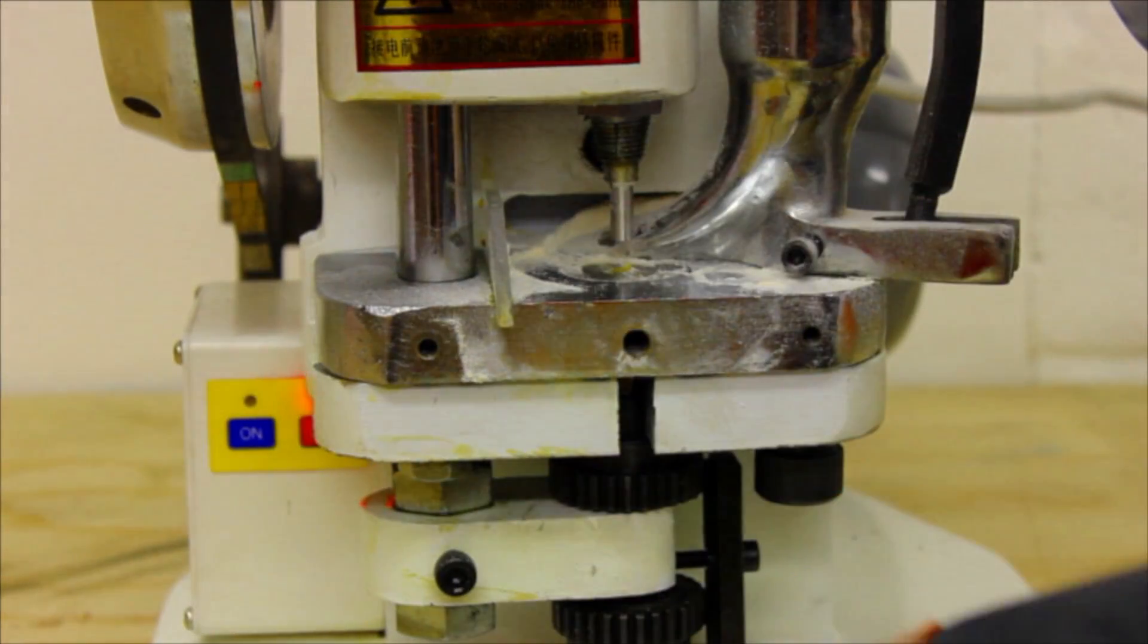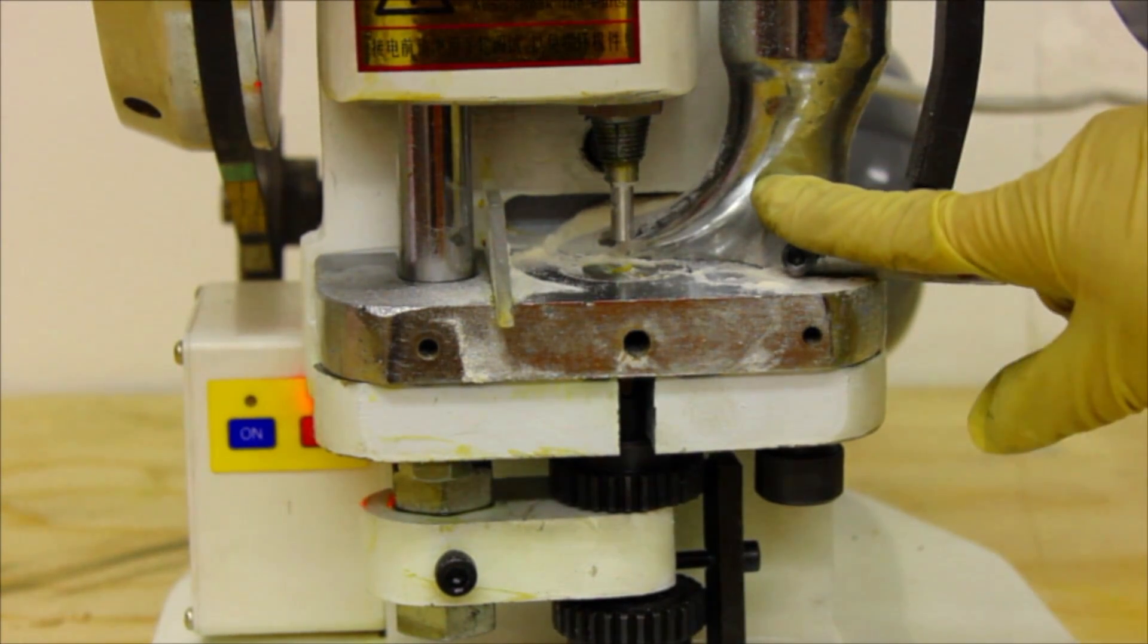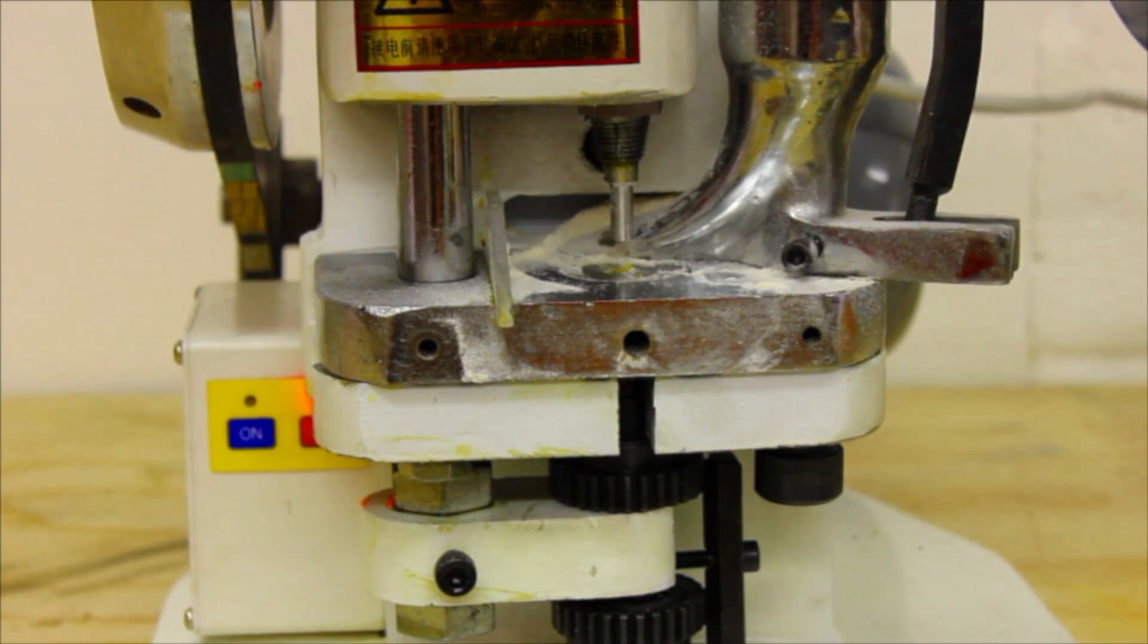Once you have removed all three of these items, you will find the next step a lot easier if you remove the boot from the right hand side of the machine. This is done using an allen key set.